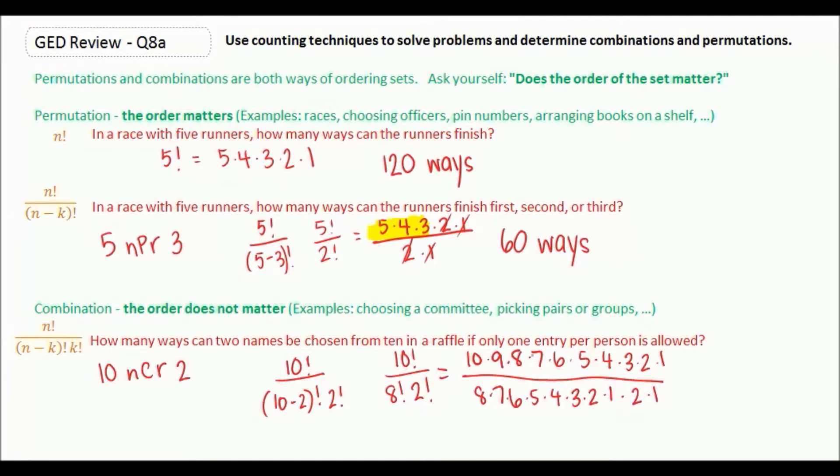And while it looks like a lot, we see we have an eight and an eight, a seven and a seven, and a lot of our numbers will divide out. So really we're left with ninety, ten times nine, over two times one, which is two. And ninety over two is forty-five.